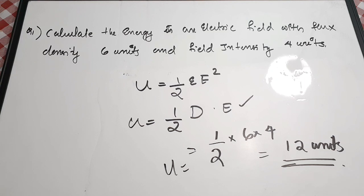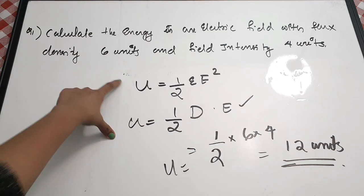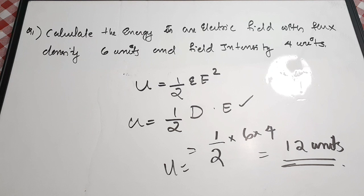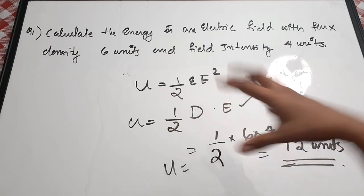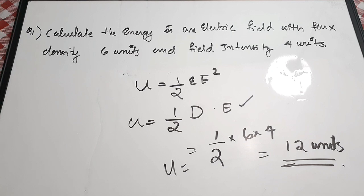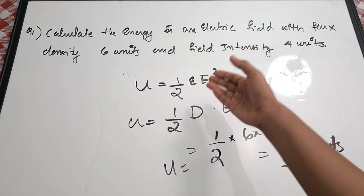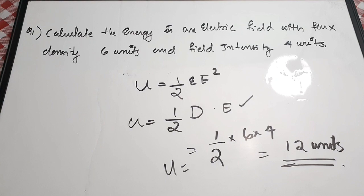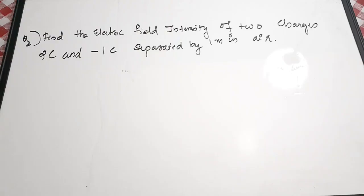So these are the two equations for finding energy in an electric field. If only the electric field intensity is given and you know epsilon, use U = ½εE². If both flux density and electric field intensity are given, use U = ½D·E.